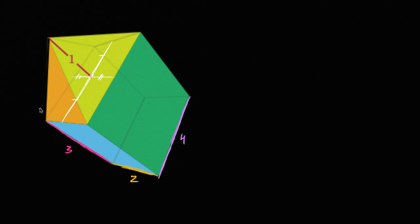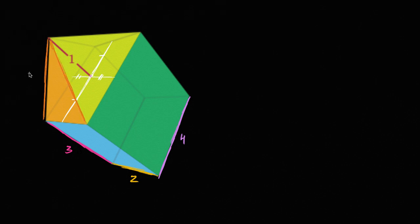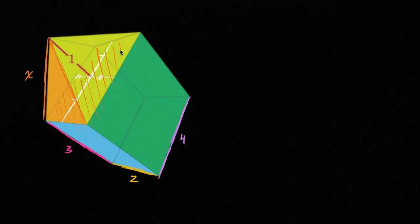Our goal here is to figure out what is the length of one of these edges right over here — so either that one or this one right over here. What is that length? We will call that x. I encourage you to pause this video and try to think about it on your own. Remember, this is a right pyramid, so what that tells us is that this red line that's one unit long is perpendicular to the entire plane — perpendicular to the top of the rectangular prism. I encourage you to pause the video and see if you can figure it out. You will have to use the Pythagorean theorem, maybe more than once.